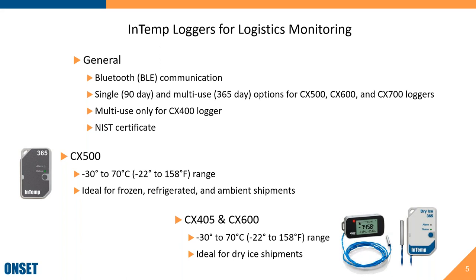The CX 500 line goes from -30 to 70 degrees Celsius, ideal for frozen, refrigerated, and ambient shipments. It is our base transportation product where you'll see the most cost value — you can get quantity discounts, and it is cheaper than our other transportation loggers.